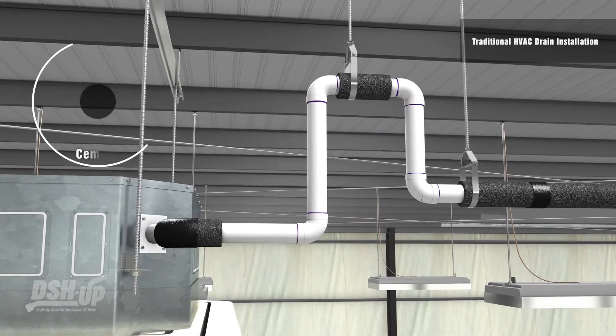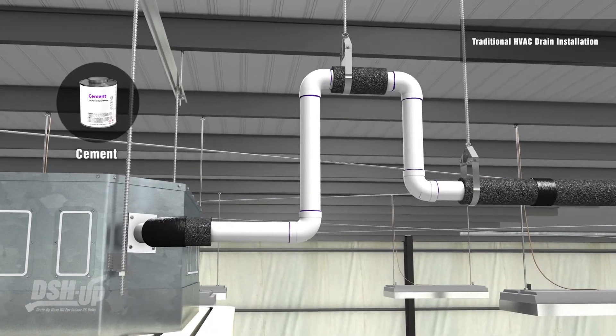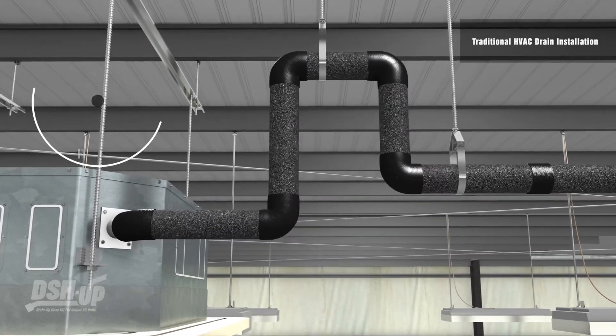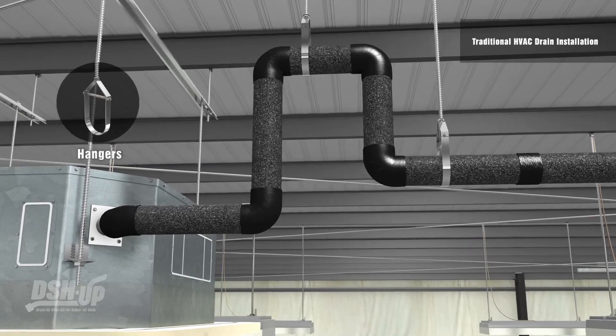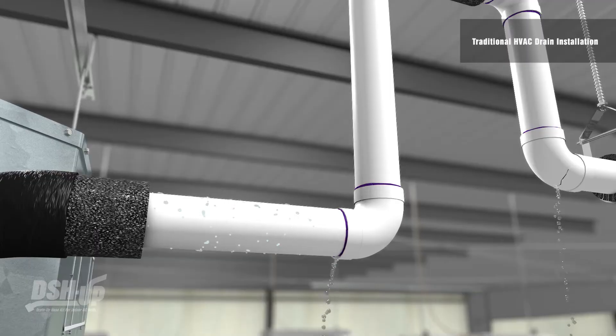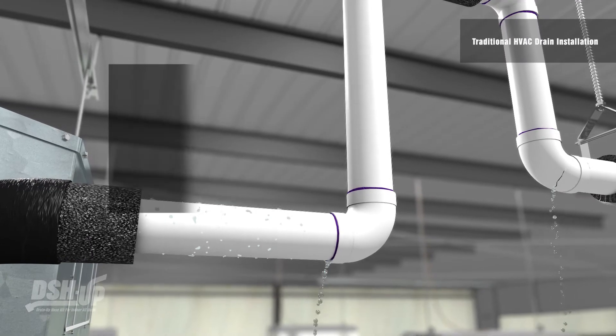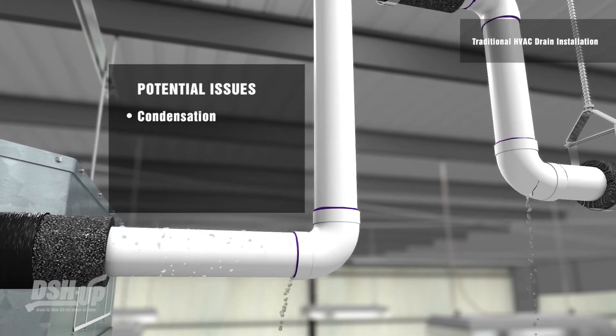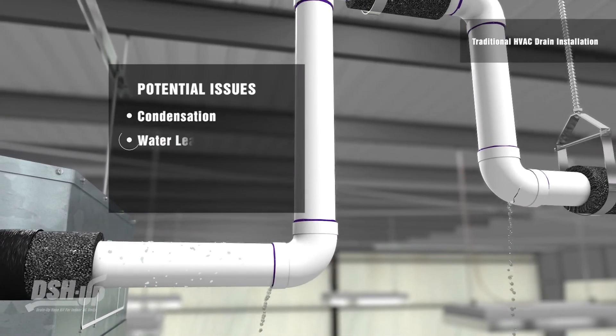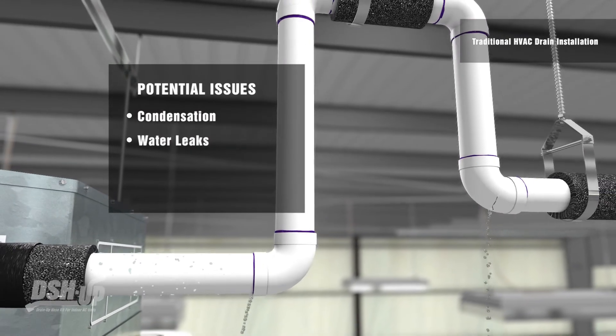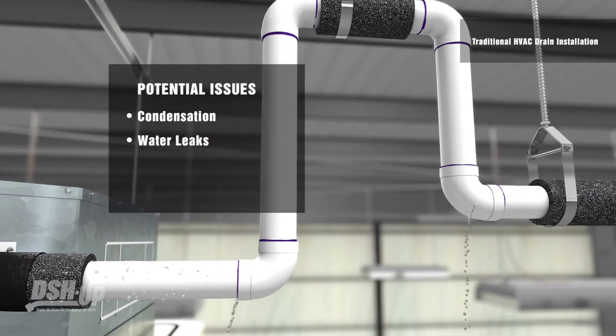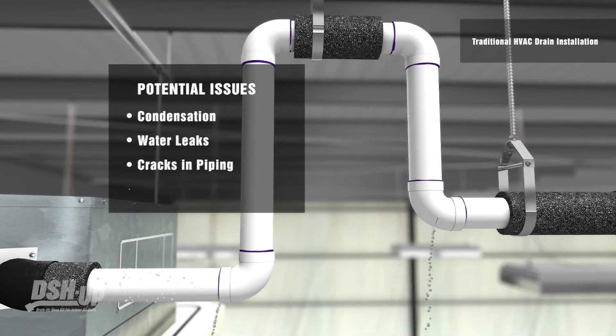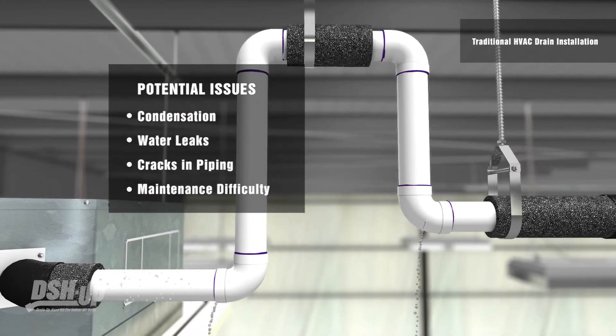When installing traditional drain-up piping, many cuts and materials must be used to accommodate tight proximities. Not only does this take more time, but also causes potential issues such as condensation due to insulation attachment failures, water leaks due to multiple connections and cement failures, cracks in piping due to stressed attachments, and difficult maintenance due to fixed cement.